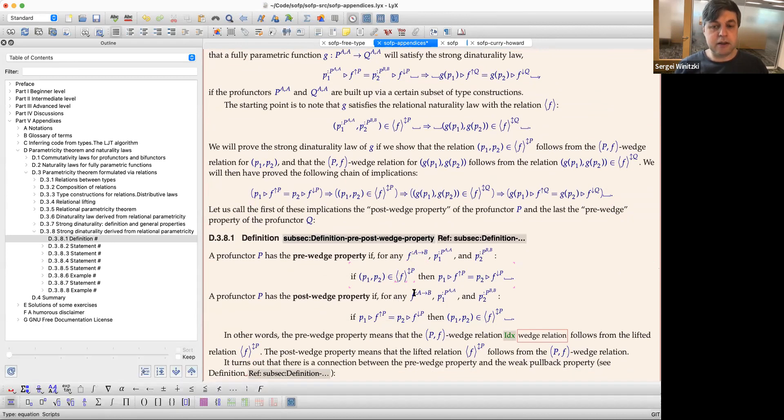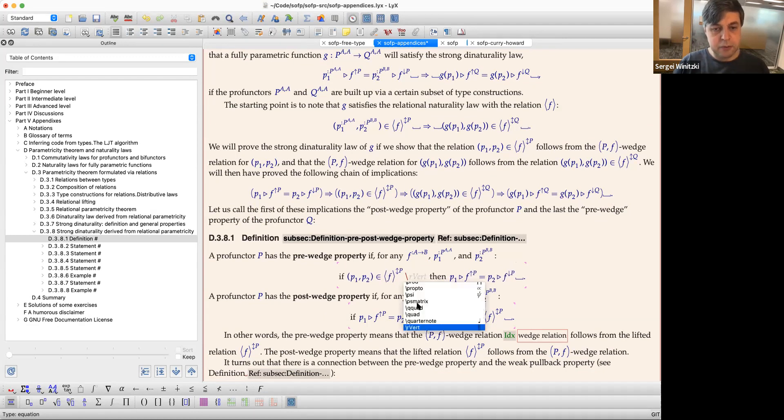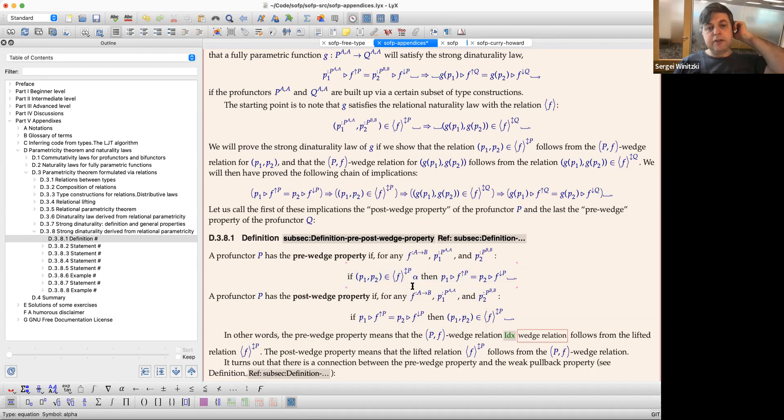Now in the LaTeX, for example, I can type, if you know LaTeX, for example, the formula alpha, for example. That's a Greek letter alpha. But it will automatically show me the Greek letter alpha right away. So I can type in arbitrary LaTeX, and I have it shown immediately.